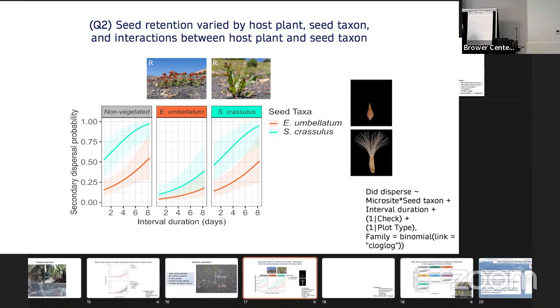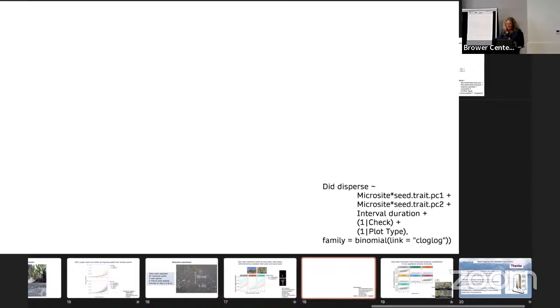But then where it gets interesting is depending on the environment these seeds are inserted into. So the Eriogonum, this mat plant, we still see this trend of Senecio having a higher dispersal probability than the Eriogonum, but it's much more diminished compared to the non-vegetated area. And it's very comparable to how well the Eriogonum is dispersed in a similar environment. Then if we look at how well these seeds are dispersed in the Senecio, which has very low basal vegetation, we see results that are similar to the non-vegetated microsite. So high dispersal of both species, but higher dispersal of Senecio compared to the Eriogonum.